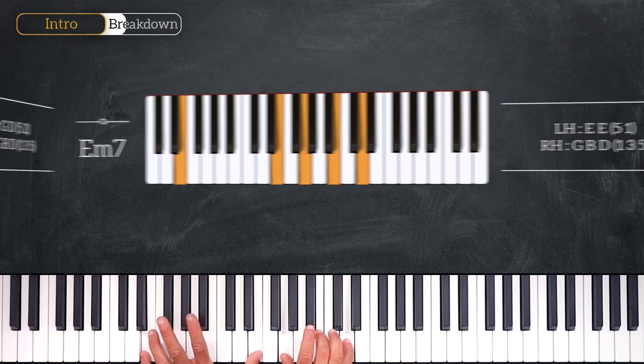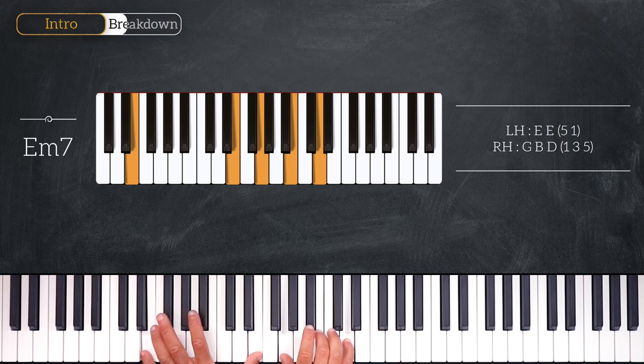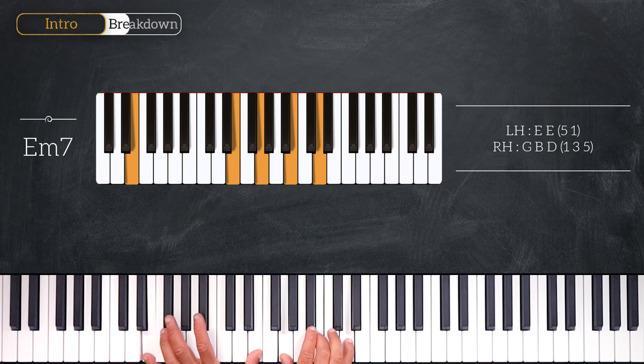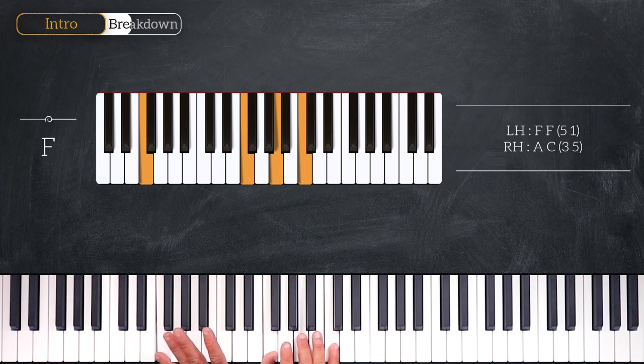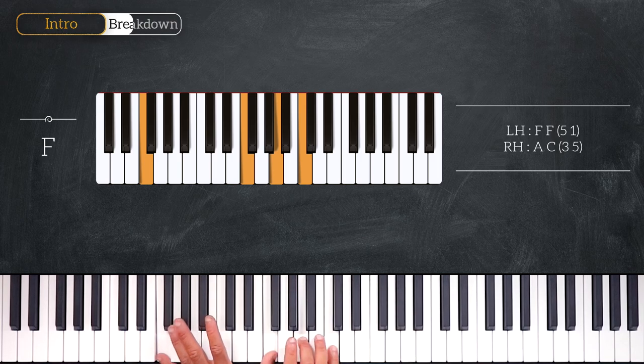Then we'll play this E minor 7, playing octave E on the left and G, B, D on the right. And we'll finish this chord progression on this F major chord: octave F, A, C.